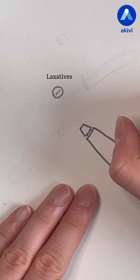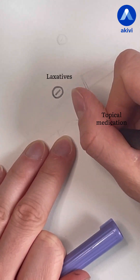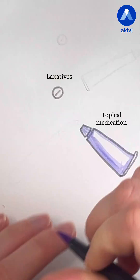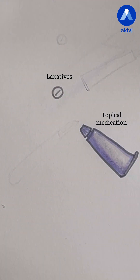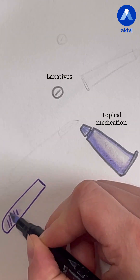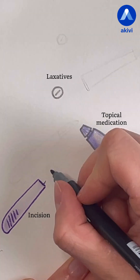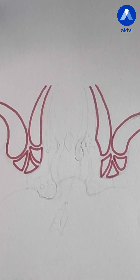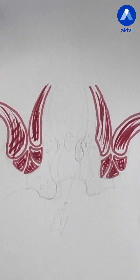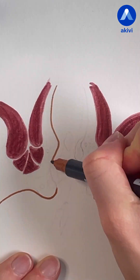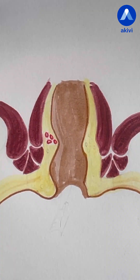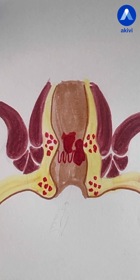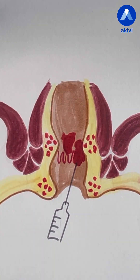Management of hemorrhoids focuses on preventing risk factors and use of topical medications during flare-ups to reduce local inflammation. In cases of hemorrhoidal thrombosis, a surgical incision may be performed to provide immediate pain relief. For advanced or severely symptomatic disease, more definitive endoscopic or surgical treatment can be proposed, aiming to improve the patient's quality of life.